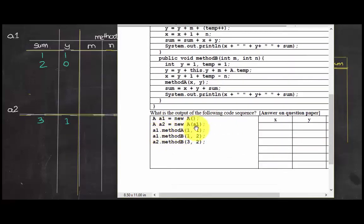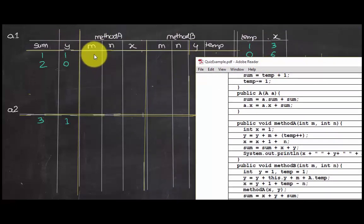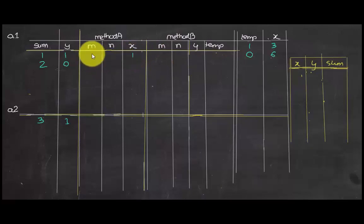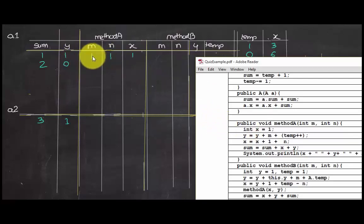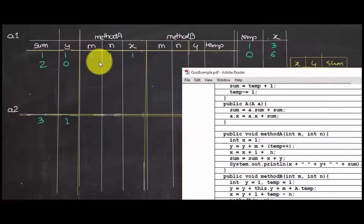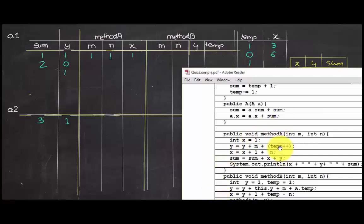Now we call a1.methodA with values m equals 1 and n equals 1. We fill in: x equals 1, m is 1, n is 1. Then y equals y plus m plus temp — there's no y in method A so we use a1's y, which is 0. So 0 plus 1 plus 0 equals 1, so y equals 1. Temp is incremented to 1 (temp++ uses the existing value then increments). Then x equals x plus 1 plus n: 1 plus 1 plus 1 equals 3, so x equals 3.